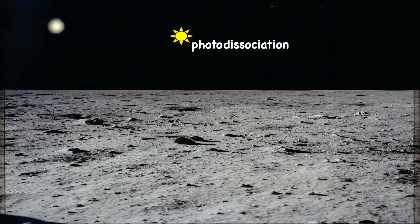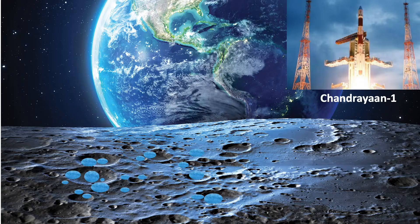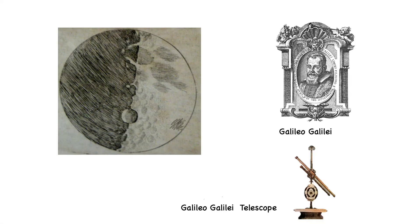Liquid water can't persist on the lunar surface when exposed to solar radiation. Water quickly decomposes through a process known as photo-dissociation and is lost to space. However, NASA published results on September 25th, 2009 showing that ISRO's Indian spacecraft Chandrayaan-1 had discovered water on the moon.